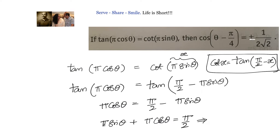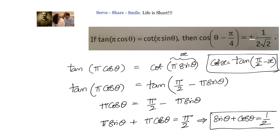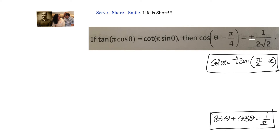Taking π out, we have sinθ plus cosθ equals 1/2. So let us remember this — we got sinθ plus cosθ equals 1/2. Now let us see what we need to prove.